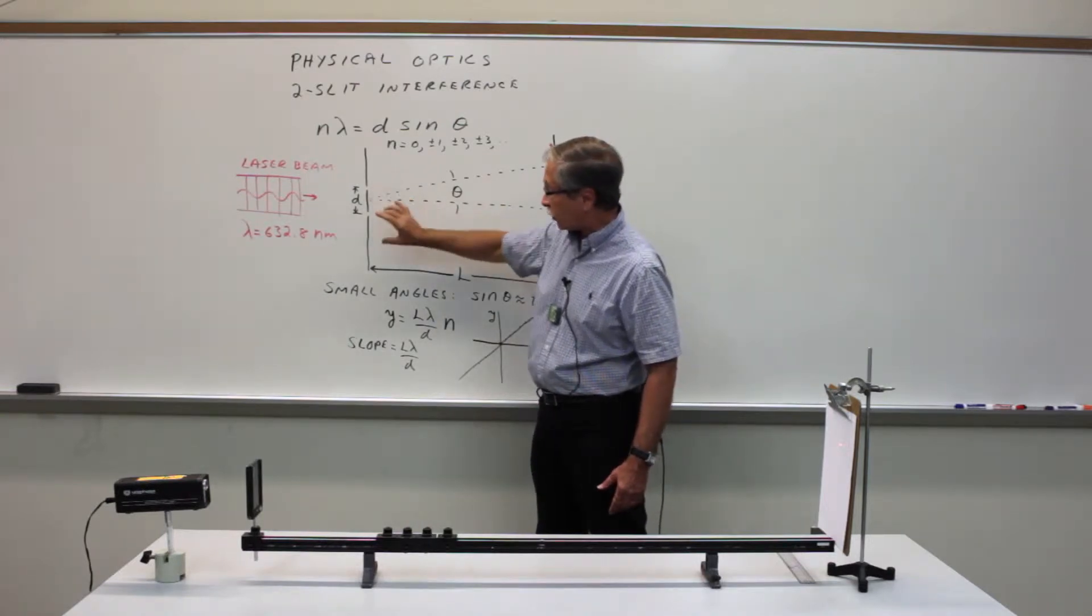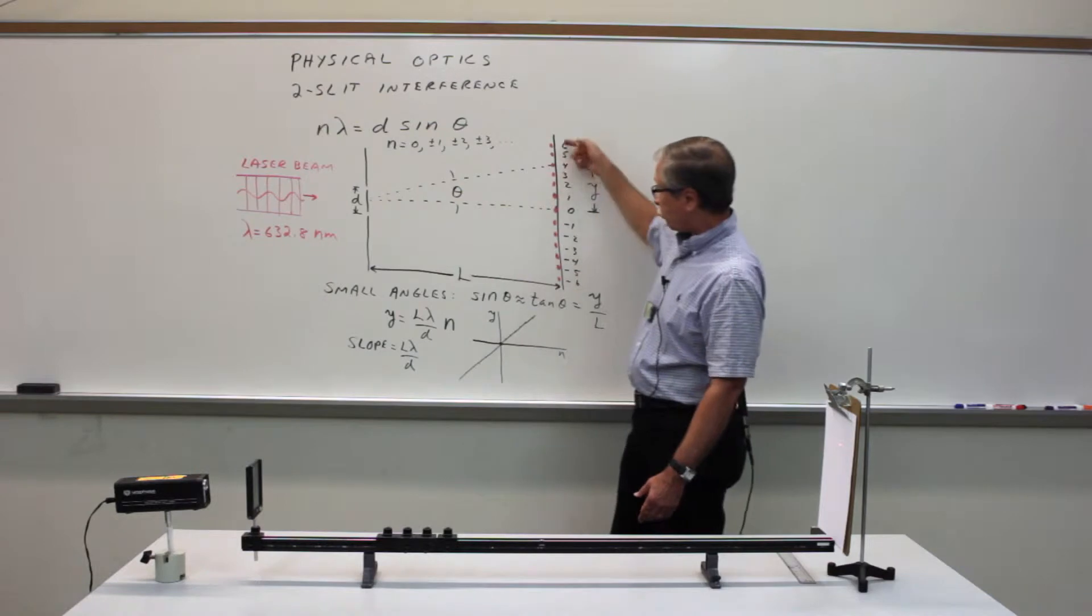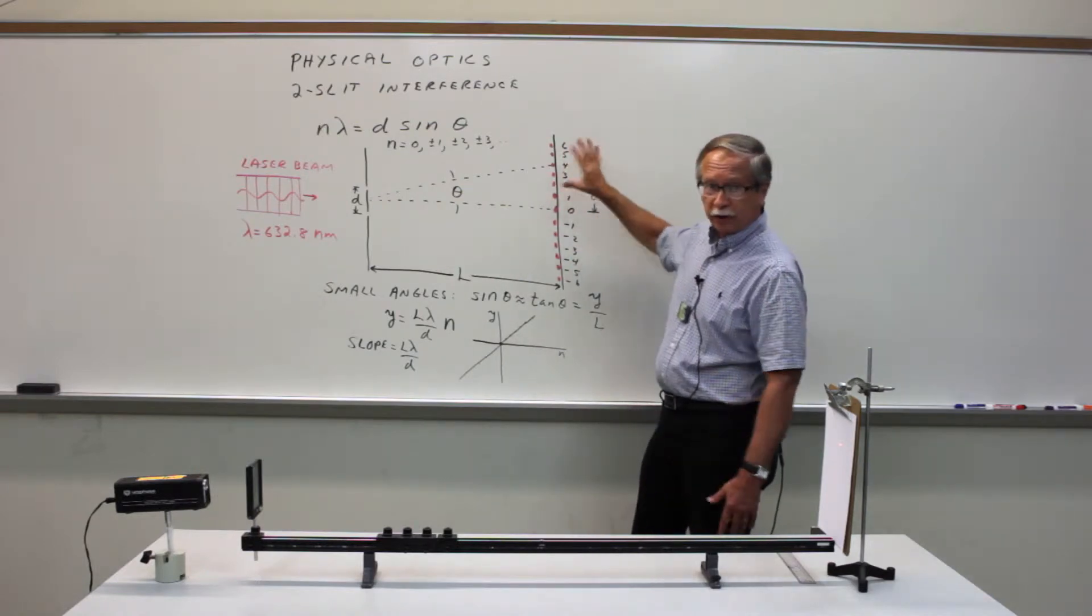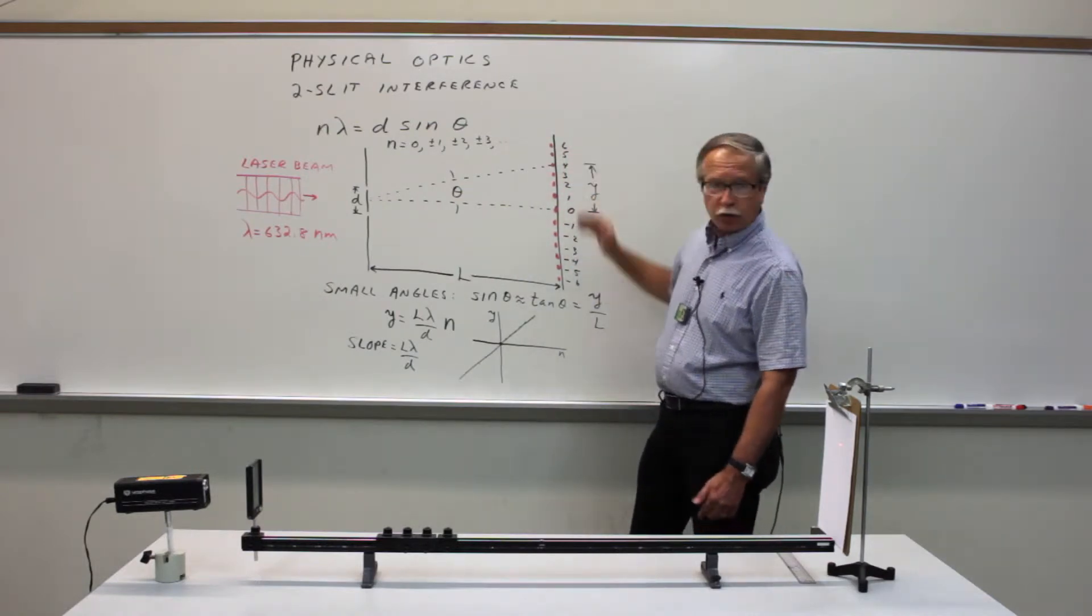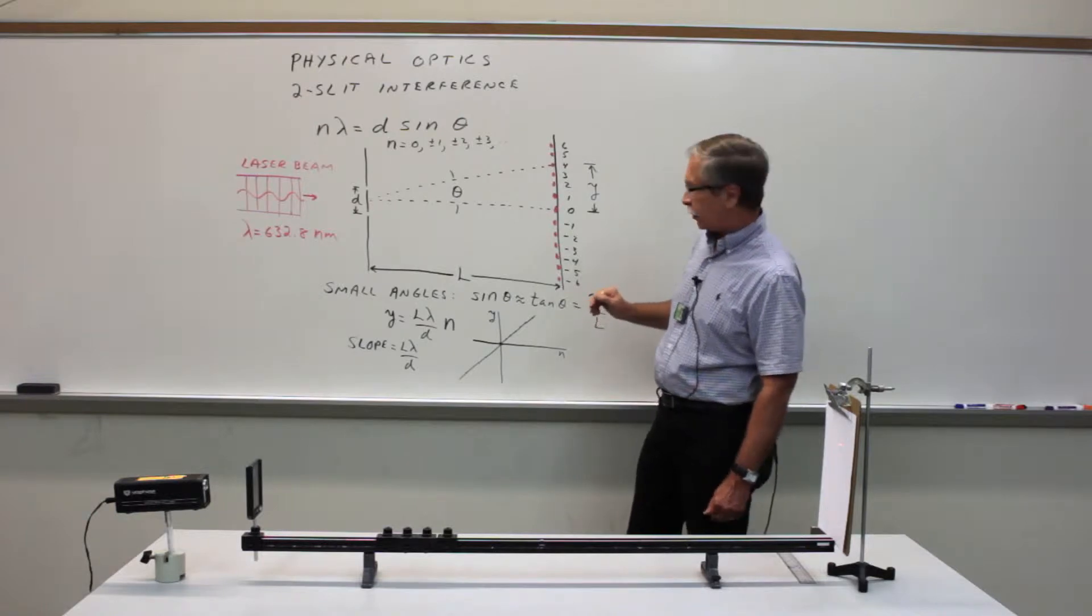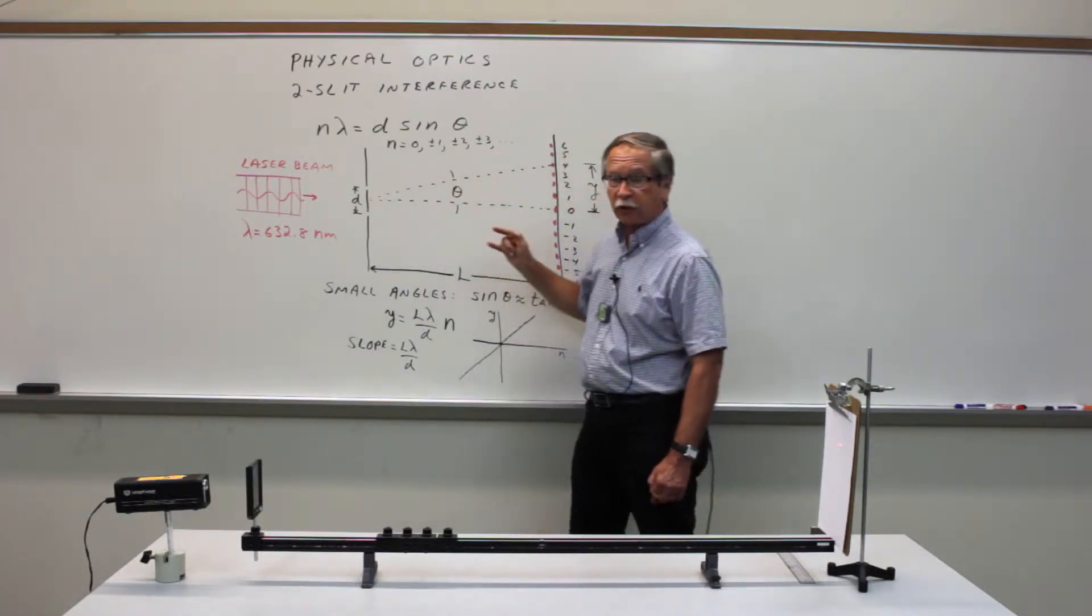by creating a laser interference pattern and measuring the distribution of intensity of light on the screen produced by the interference from the two slits.